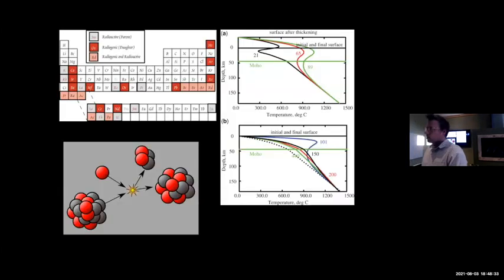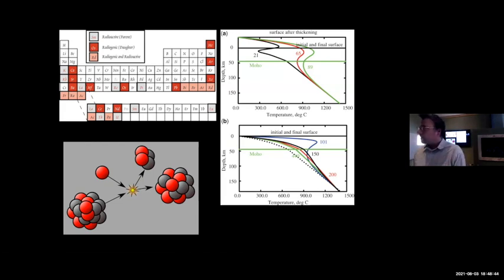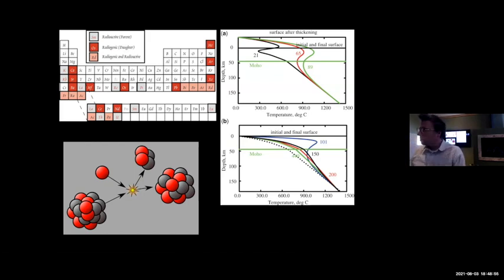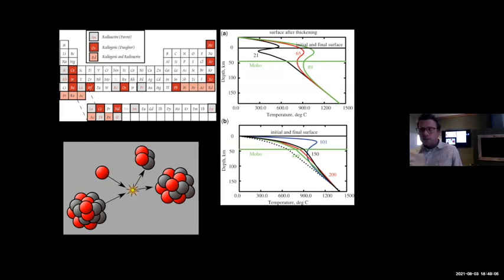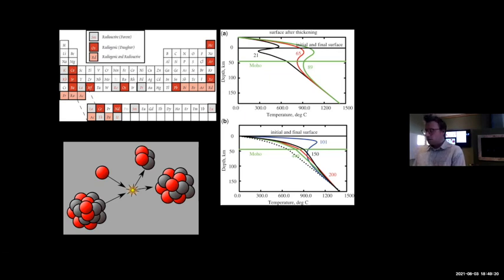The reason crustal thickening causes melting is that radiogenic elements — potassium, thorium, uranium, rubidium — are concentrated in the upper-middle crust. As these decay, they generate heat. If we thicken the crust, we create a larger column with these elements, generating more heat. Models show that if you instantaneously thicken the crust, about 40 to 50 million years after that, rocks can get hot enough to melt. That roughly fits the timing: Sevier thrust-belt shortening from about 120 to 80 million years ago, and about 50 million years after that, these rocks start appearing.